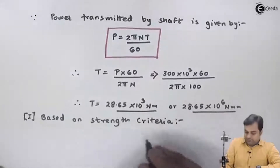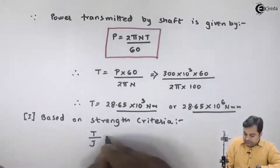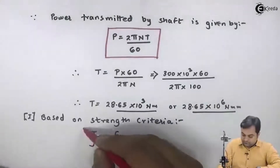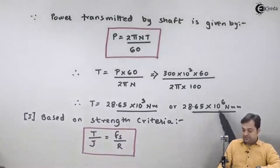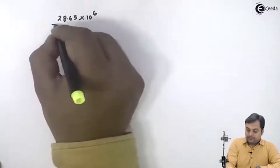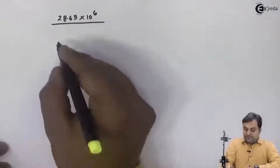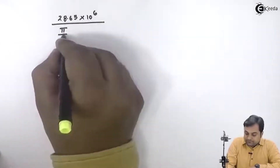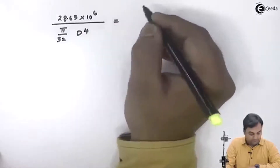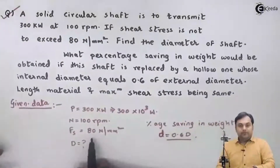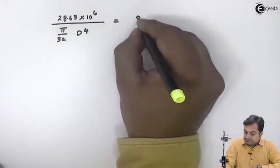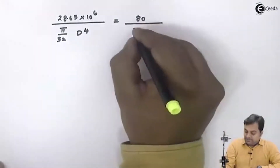By strength criteria, the formula is T/J = fs/R. The torque T is 28.65×10⁶ N·mm. J for a solid shaft is π/32 × D⁴. The shear stress fs is given as 80 Newton per mm square, and R equals D/2.